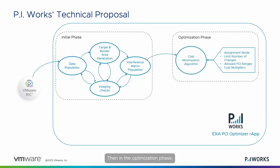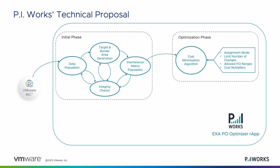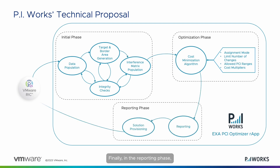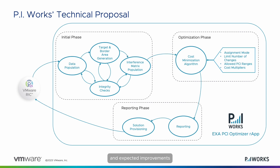Then, in the optimization phase, the R-App takes parameters as input from the user and finds the best PCI plan by solving the issues in the network and minimizing the conflict confusions. Finally, in the reporting phase, the R-App creates detailed reports that show the changes applied to the network, along with their reasons and expected improvements.